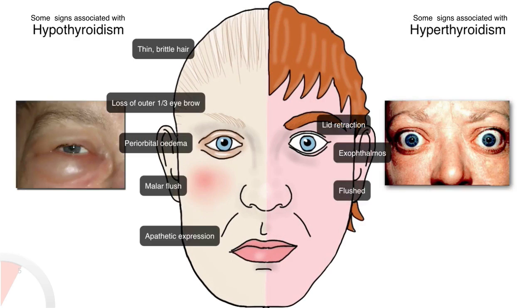In the face, look for signs of thyroid disease which may include an apathetic expression, malar flush or pallor, loss of the outer third of the eyebrows, thin brittle hair, dryness of hair and skin, or edema.